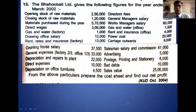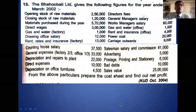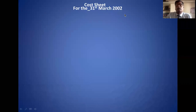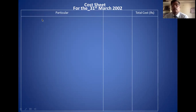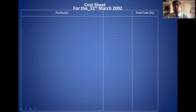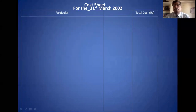Now we draw the cost sheet for the year ending 31st March 2002. In this cost sheet there is no per unit column, because units are not given in the problem. Therefore it is not possible to calculate cost per unit, so there is no need for a per unit column.